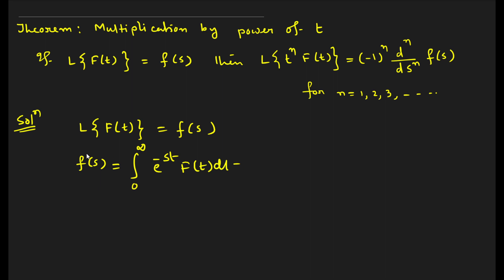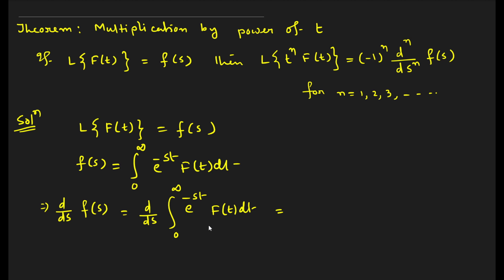We will differentiate this. So d/ds of F(s) equals d/ds of the integral from 0 to infinity of e^(-st) f(t) dt. In the very first lecture we saw that s and t are independent of each other, so we can bring the differentiation inside the integral: the integral from 0 to infinity of the partial derivative with respect to s of e^(-st) f(t) dt. This is called differentiation under the integral sign.